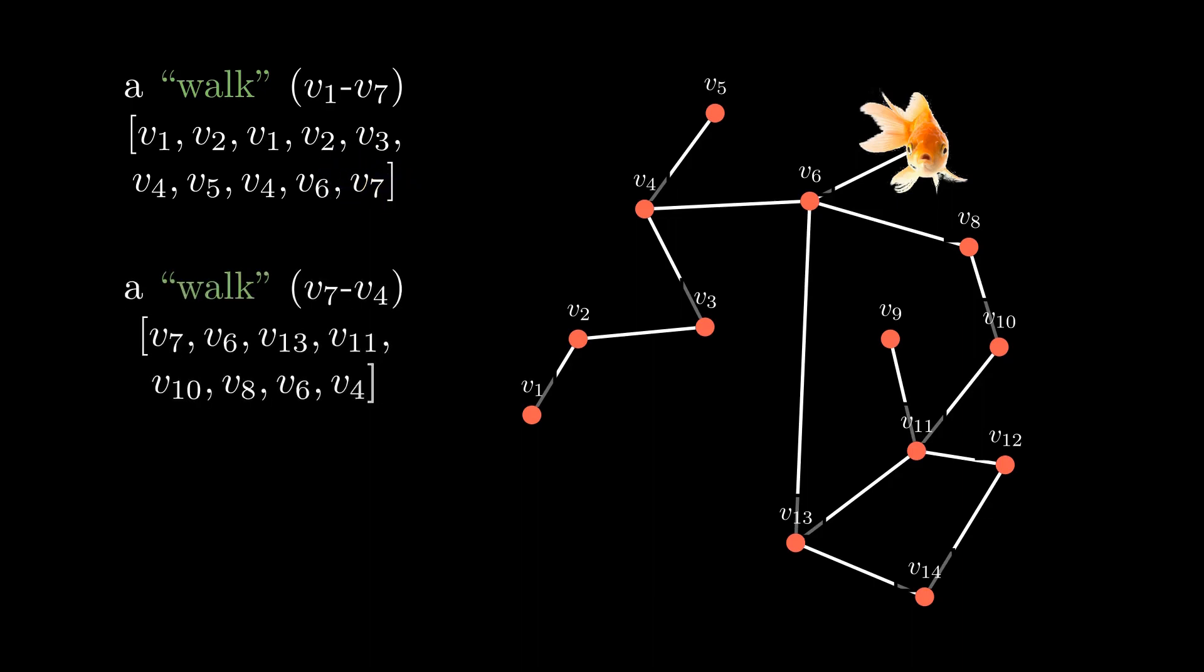This is another example, from V7 to V4. There can be more than one walk from V7 to V4 as you can see here.